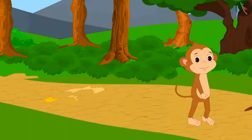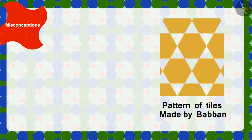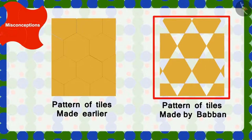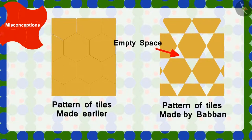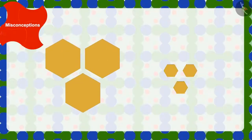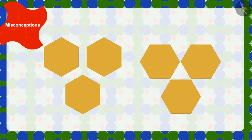Children, can you tell me what is the difference between the patterns of the tiles made by Babban and the pattern of tiles already present on the floor? In the pattern made by Babban there is some space between two tiles, whereas there was no space in the previous pattern of the floor. Babban had used the same tiles that were already fixed on the floor — then why did this happen? Some shapes are such that they can be joined in only one way so that no space remains between them.